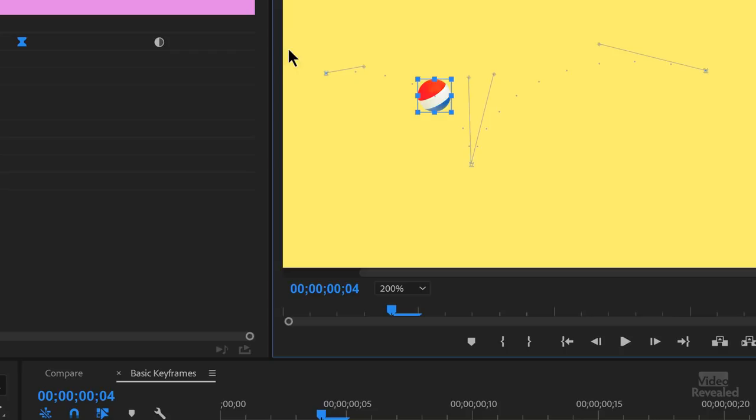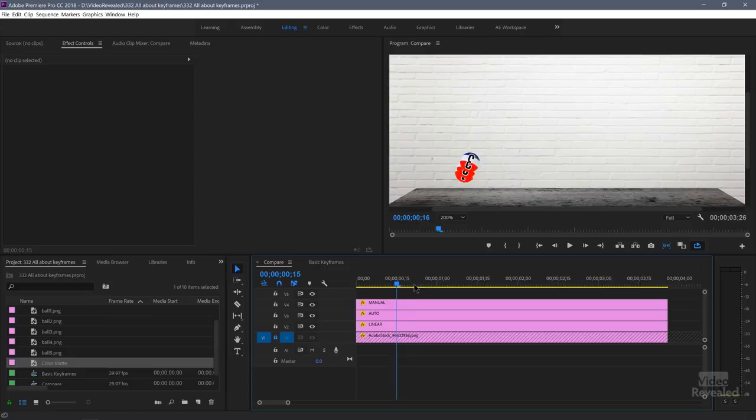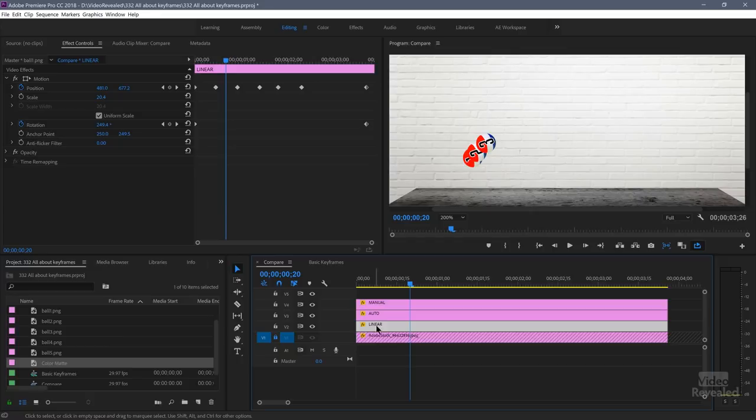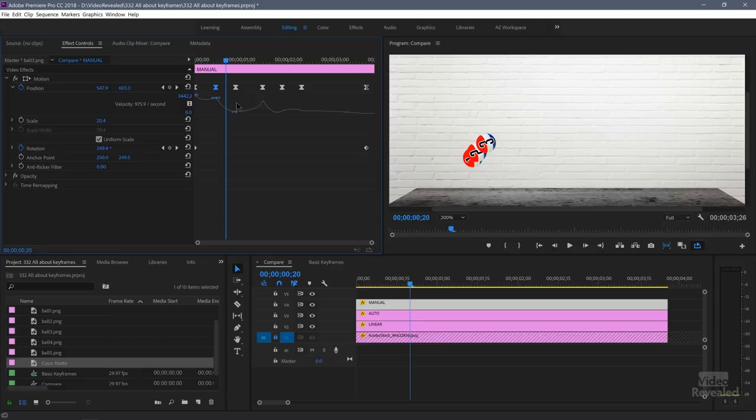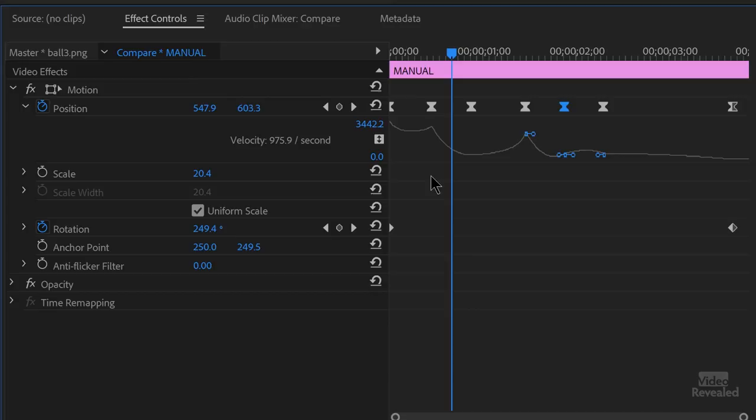And I put together a comparison here of three different balls. I've got linear is number one, auto is number two, and a manual one where I've created my own keyframes here. And to see this, you can open up position. So if you twirl this down, if you click here, you can actually drag this, make this area larger and see a little bit more of what's going on.